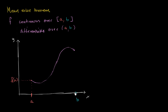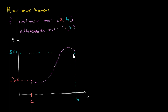This point right over here, the x-value is b and the y-value is f of b. So all the mean value theorem tells us is that if we take the average rate of change over the interval, then at some point — at least at some point in this open interval — the instantaneous rate of change is going to be the same as the average rate of change.